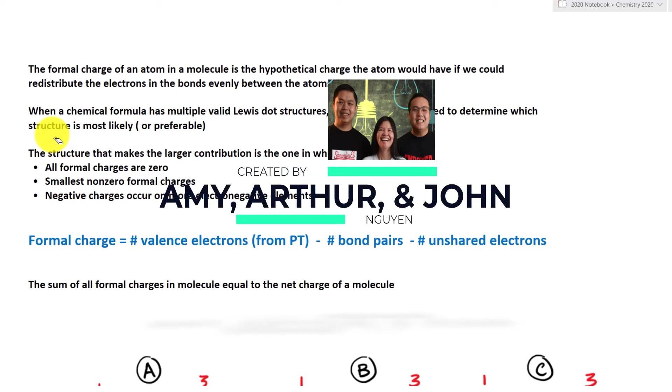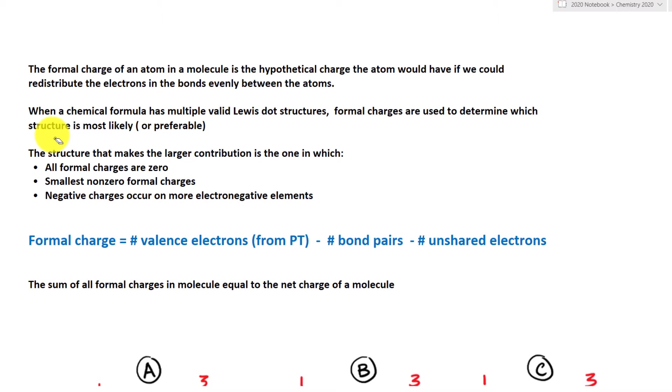Welcome back to another exciting chemistry lesson. In this lesson, we are going to look at formal charges to determine which Lewis dot structure is more likely to occur in nature by looking at formal charges.